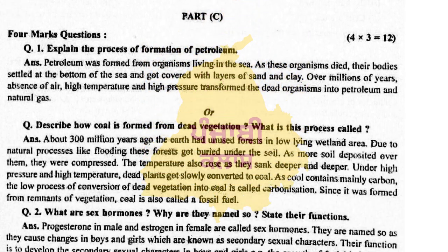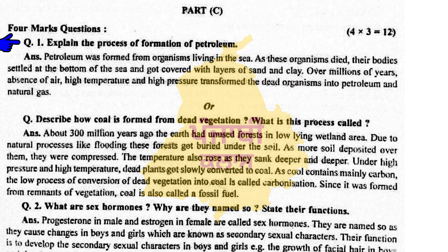Part C. Four marks questions. Question number one: Explain the process of formation of petroleum. Petroleum was formed from organisms living in the sea. As these organisms died, their bodies settled at the bottom of the sea and got covered with layers of sand and clay. Over millions of years, in the absence of air, high temperature and high pressure transformed the dead organisms into petroleum and natural gas.